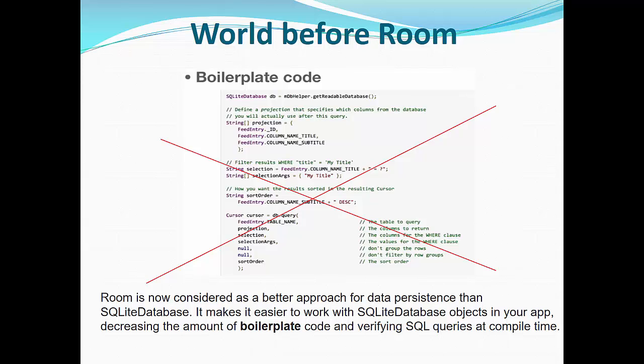Instead of SQLite, Room is coming to the foreground and is considered right now as a better approach for data persistence than SQLite database. It makes it easier to work with SQLite database objects in your app, decreasing the amount of boilerplate code and verifying SQLite queries at compile time.